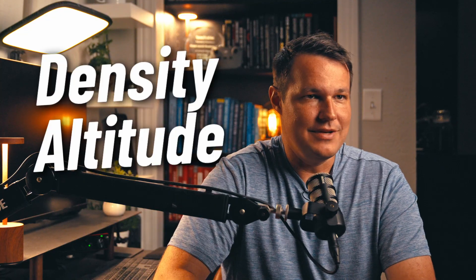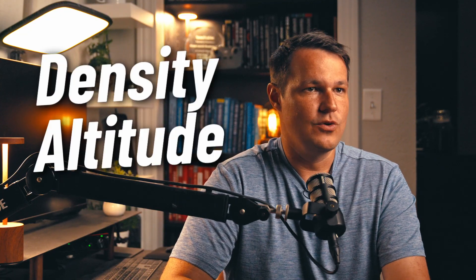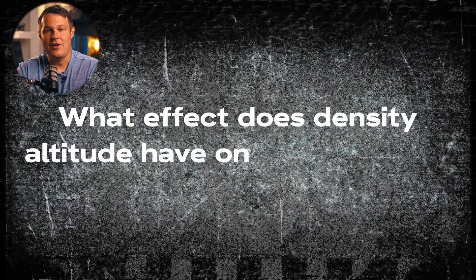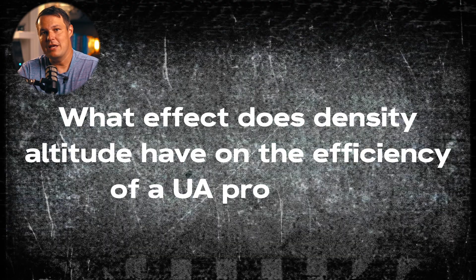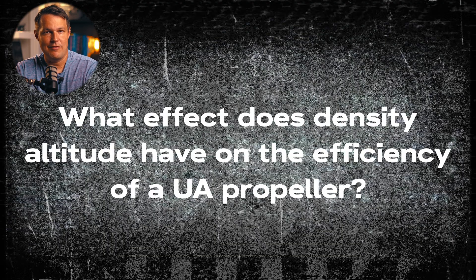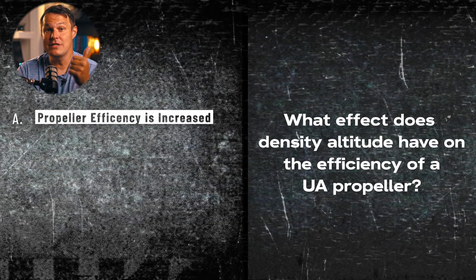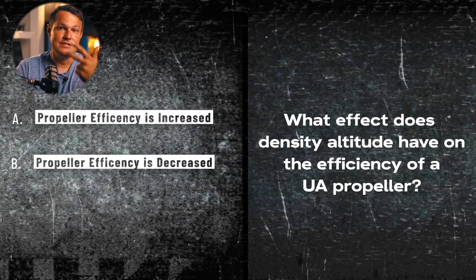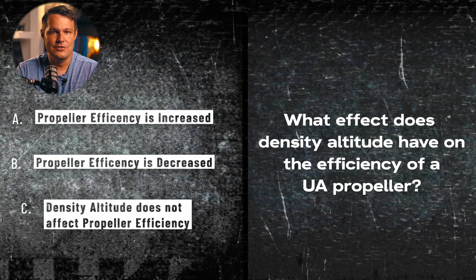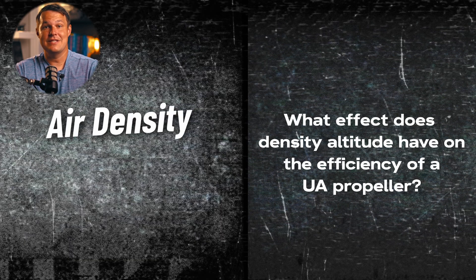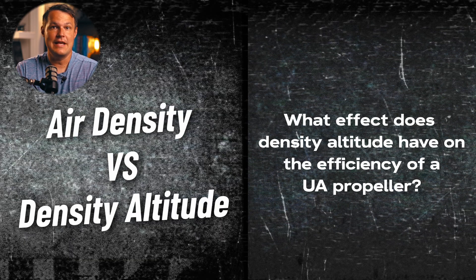Question two is about density altitude and its effects on your drone. The question asks: what effect does density altitude have on the efficiency of a UA propeller? Options are: A — propeller efficiency is increased; B — propeller efficiency is decreased; or C — density altitude does not affect propeller efficiency. This trips people up because they confuse air density with density altitude.